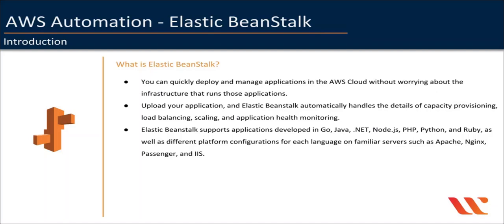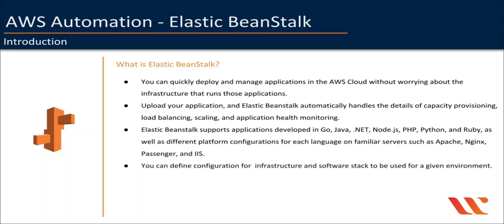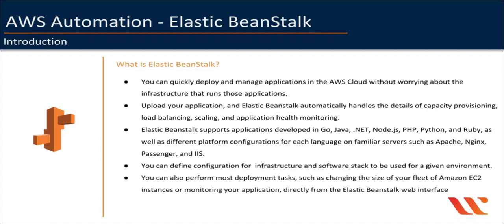Elastic Beanstalk provides a default configuration with services from AWS Free Tier, but you can also define your own custom configuration for the infrastructure and software stack to be used for the given environment. The software stack that runs on your Amazon EC2 instances depends on the configuration which you define. You can also perform most deployment tasks such as changing the size of the fleet of EC2 instances or monitoring your application directly from the Elastic Beanstalk web interface.